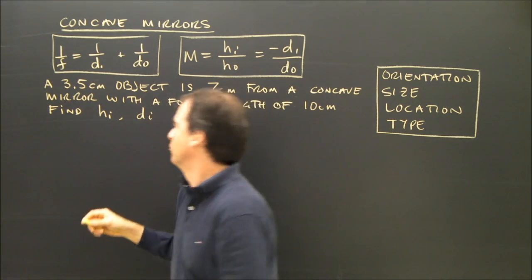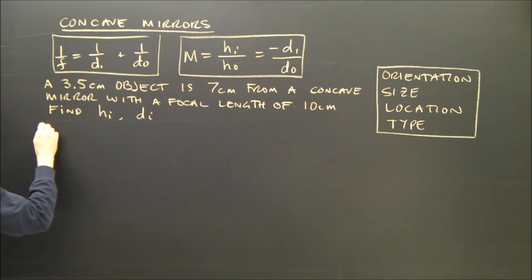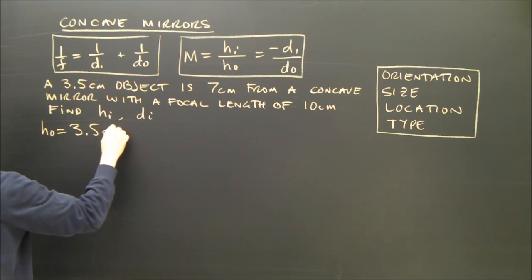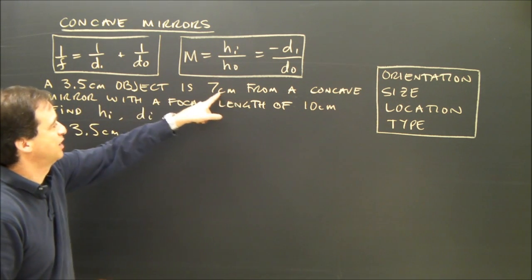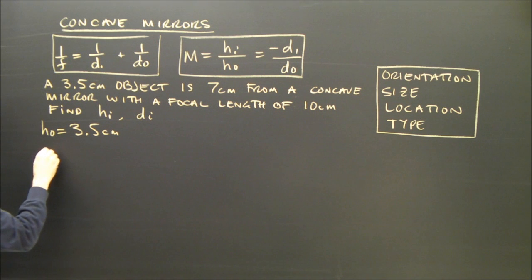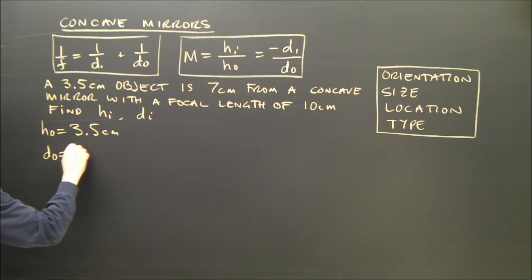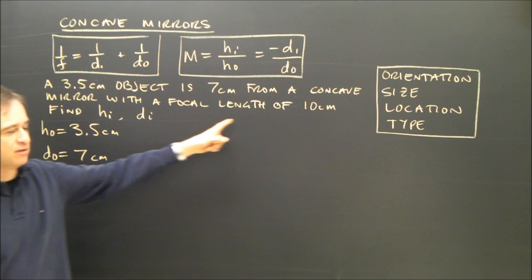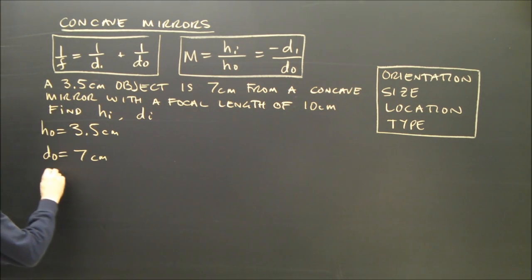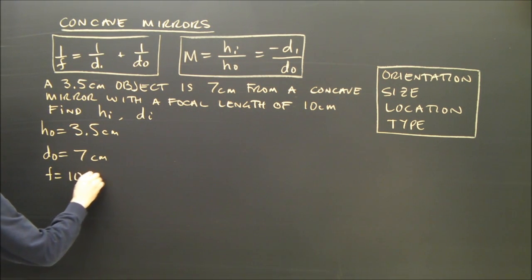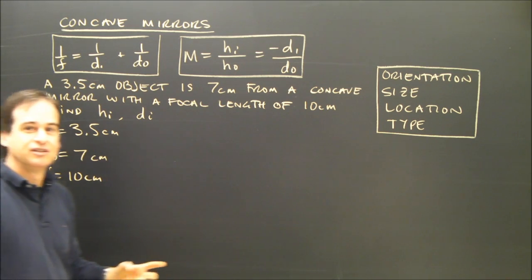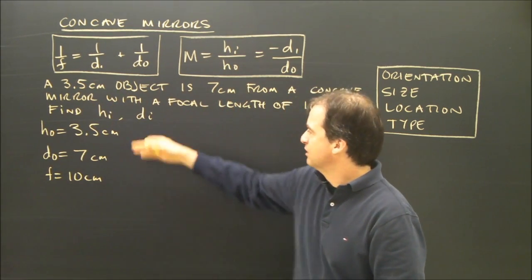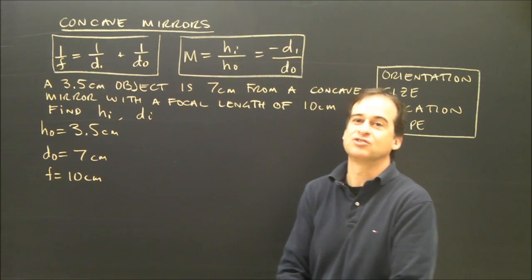The first thing we do is write down what we're given. The height of the object is 3.5 cm. It's 7 cm from a concave mirror, so the distance to the object is 7 cm. And the mirror has a focal length of 10 cm. I check the units to make sure they're okay — as long as I have consistent units, everything will work. All centimeters, so it's going to work.